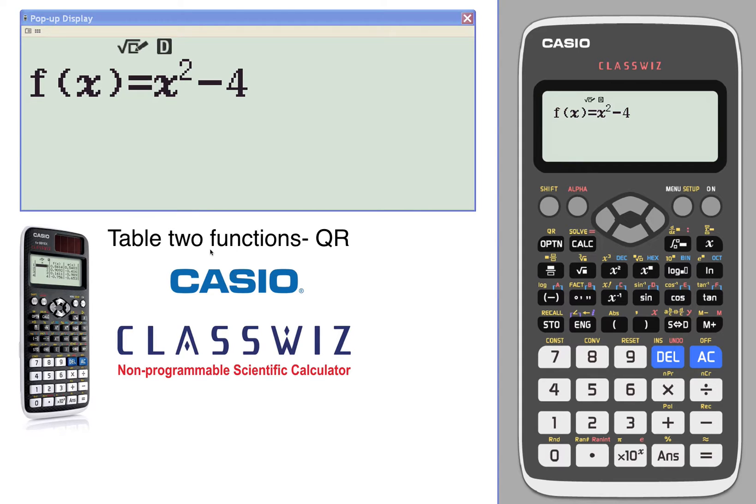Let's look at the table feature with two functions. This time we're going to use a QR code. You can use QR codes for either a single or two functions. Let's start out with two functions because we're going to be able to generate a graph and find the intersection of these two.